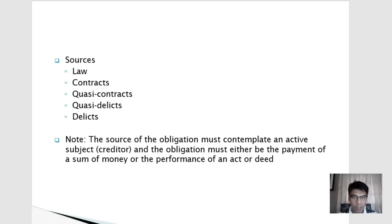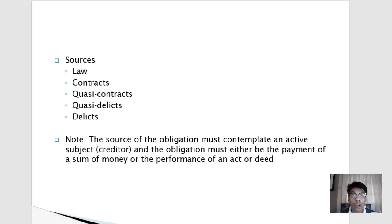Delicts are acts or omissions punishable by law — in other words, crimes. Under Article 100 of the Revised Penal Code, a person who is criminally liable is also civilly liable, but only for crimes with a private complainant or a victim. For victimless crimes — such as violations of the Dangerous Drugs Act or laws on morality like indecent publication and prostitution — there is no obligation to pay damages.